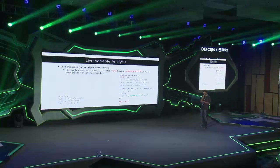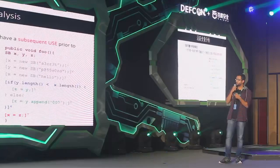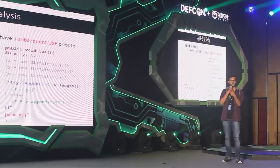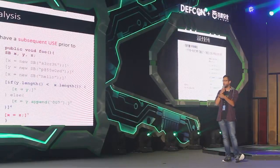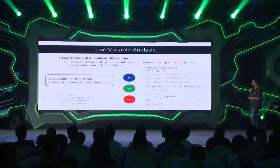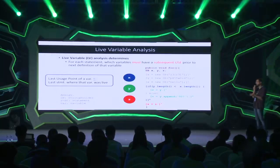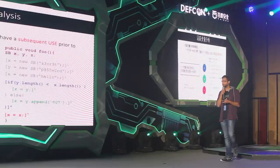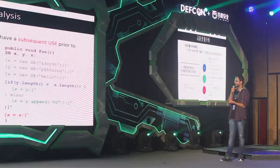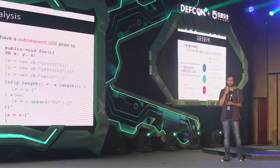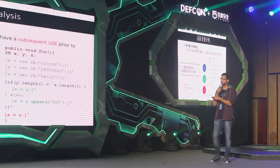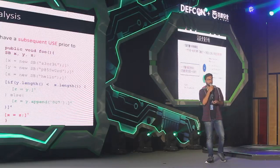It's not as easy as it seems. We'll run through this example and figure out how we determine the last usage points of x, y, and z. The last usage point of a variable is also the last statement where that variable was live — x is last live at statement 4, which is also the last usage point. We use this fact to determine the last usage point of every variable.